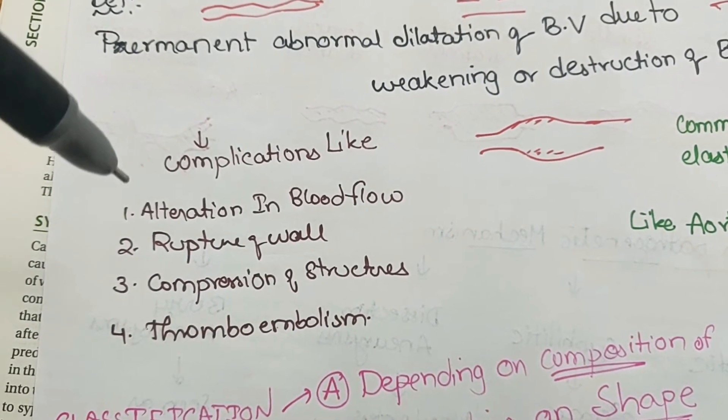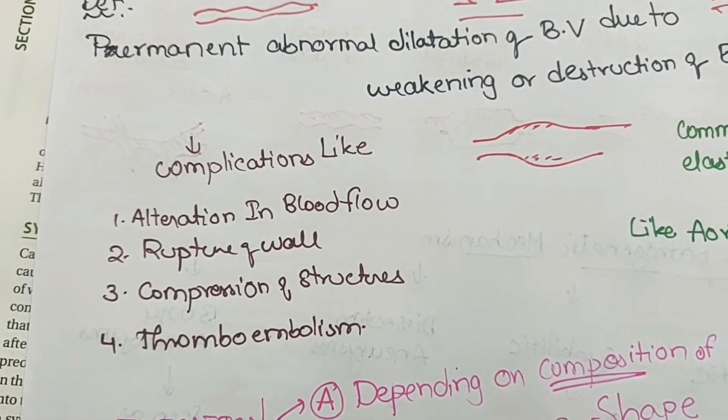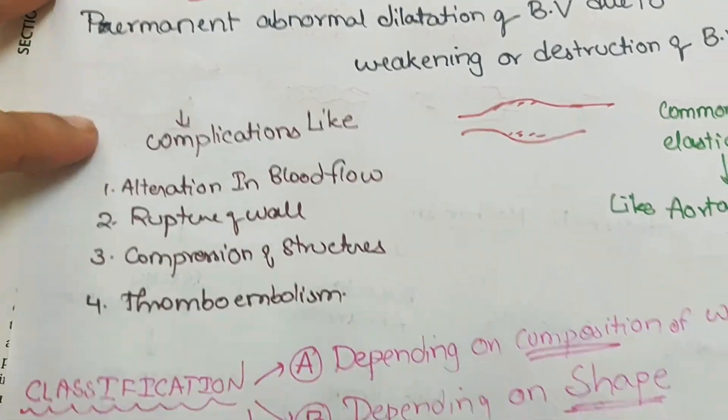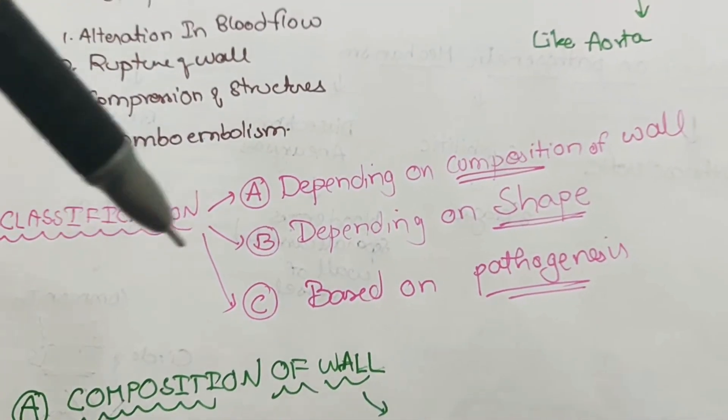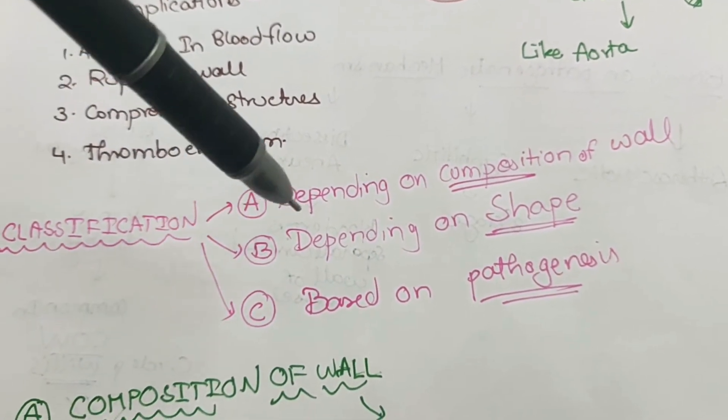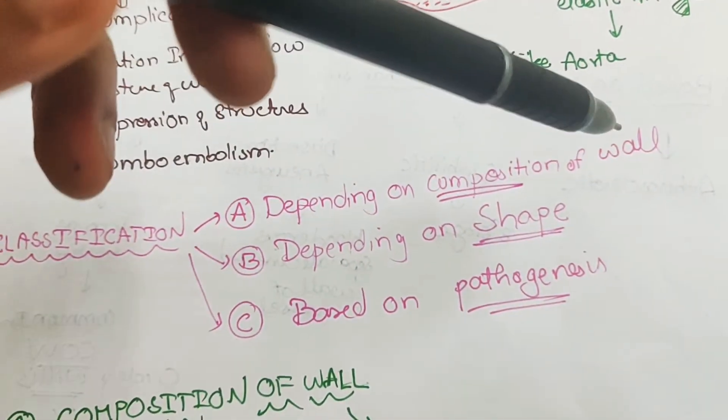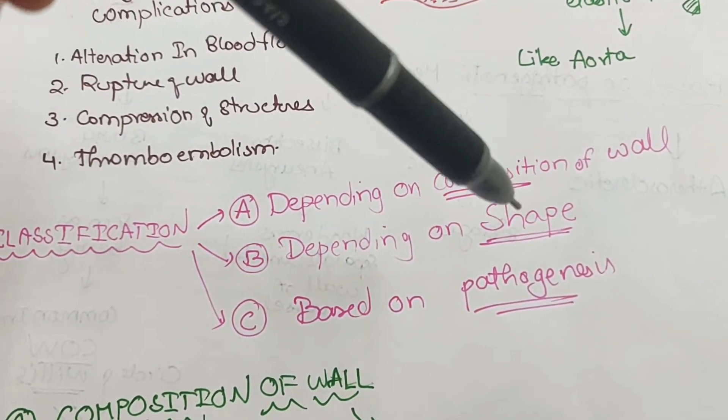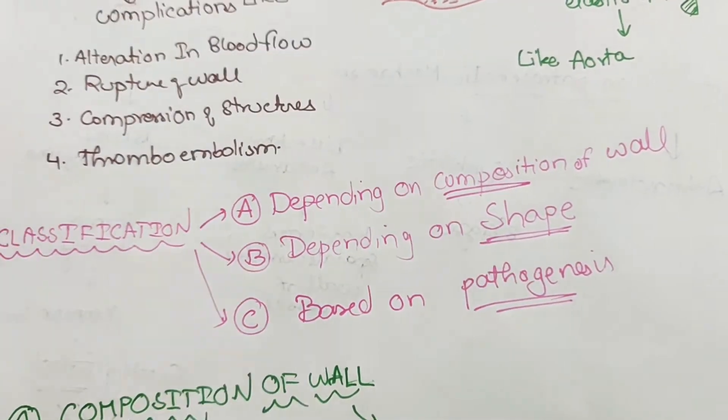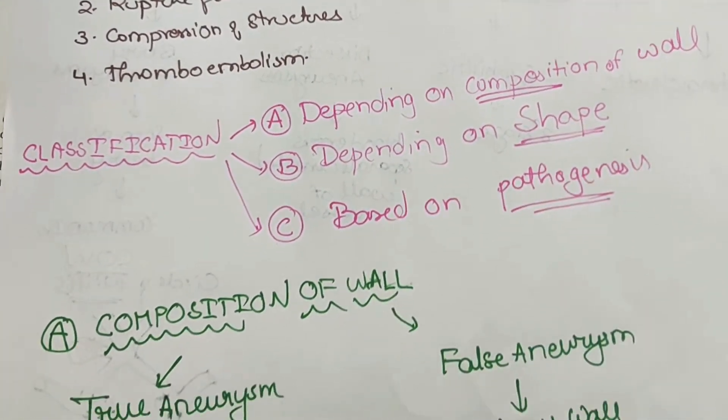It can change the dynamics of the flow and dislodge the thrombus to form emboli. Coming to the classification, it is mainly divided into three groups based on the composition of the wall, the shape of the aneurysm, and the pathogenesis causing the aneurysm.